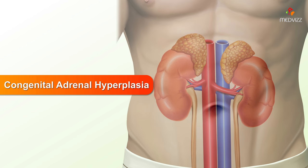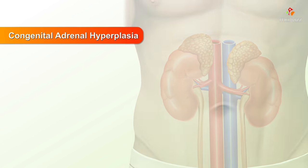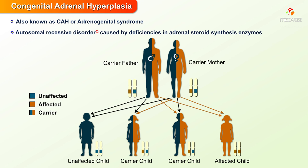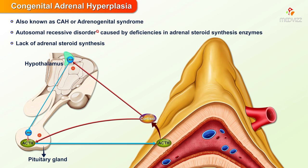Congenital Adrenal Hyperplasia, also known as CAH or Adrenogenital Syndrome, is an autosomal recessive disorder caused by deficiencies in adrenal steroid synthesis enzymes. Because of the overall lack of adrenal steroid synthesis, low cortisol levels reduce negative feedback on the pituitary system.